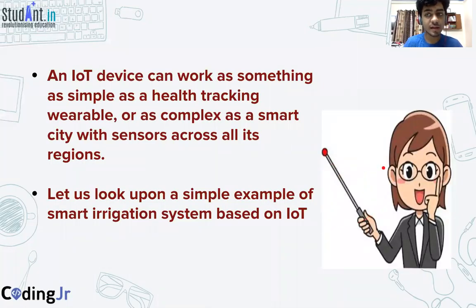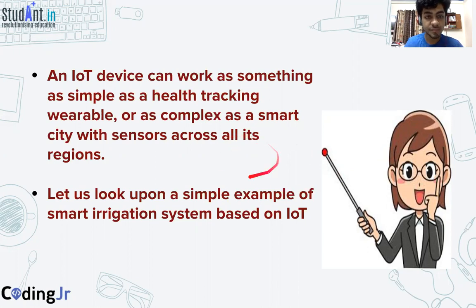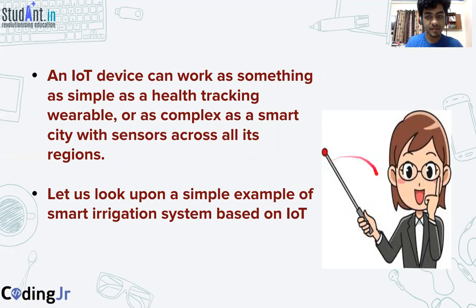An IoT device can be very simple or very complex. A simple example is a health tracking device that tracks your pulse rate, metabolism rate, heartbeat, and temperature. A complex example is a smart city, where all objects are connected as IoT devices — it is very complex to connect that many objects to each other.